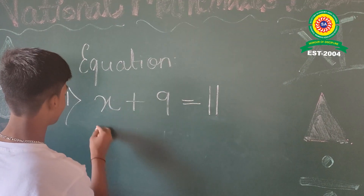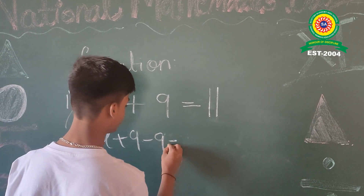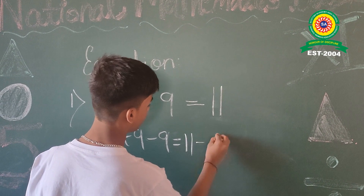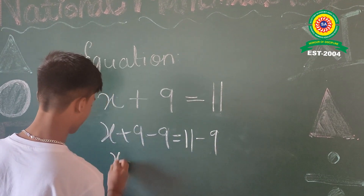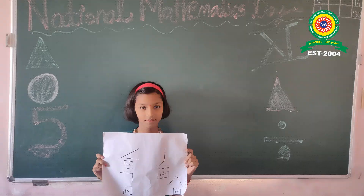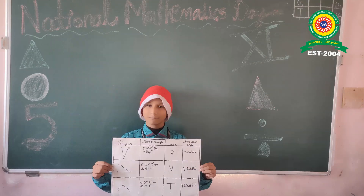X plus 9 equals 11. X plus 9 minus 9 equals 11 minus 9. X equals 2.